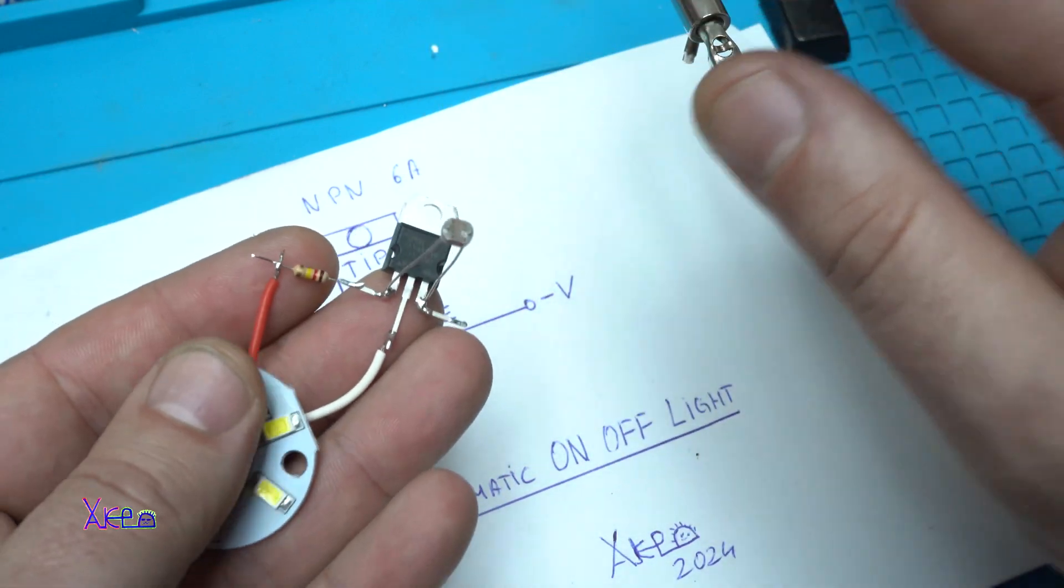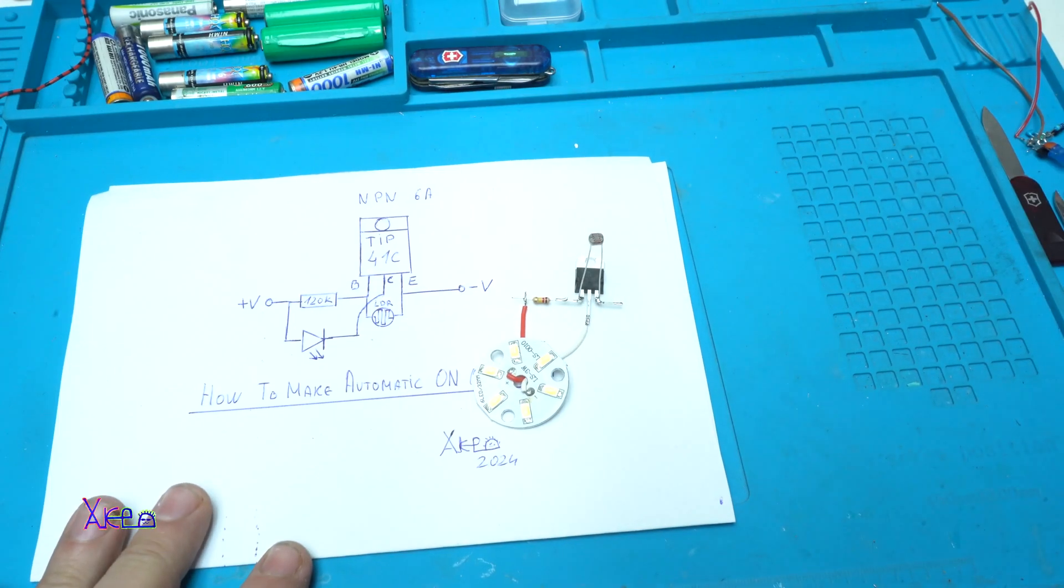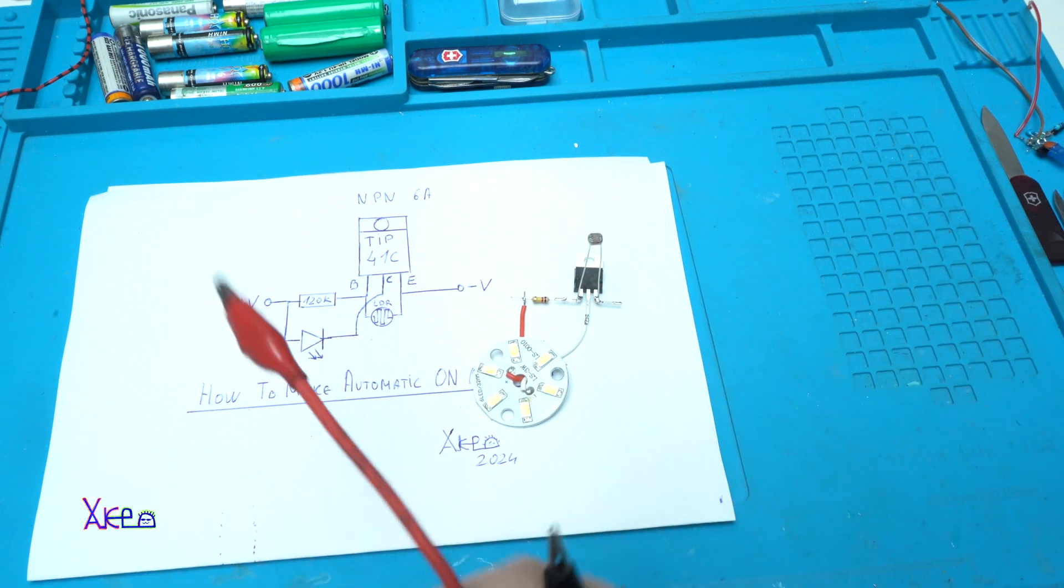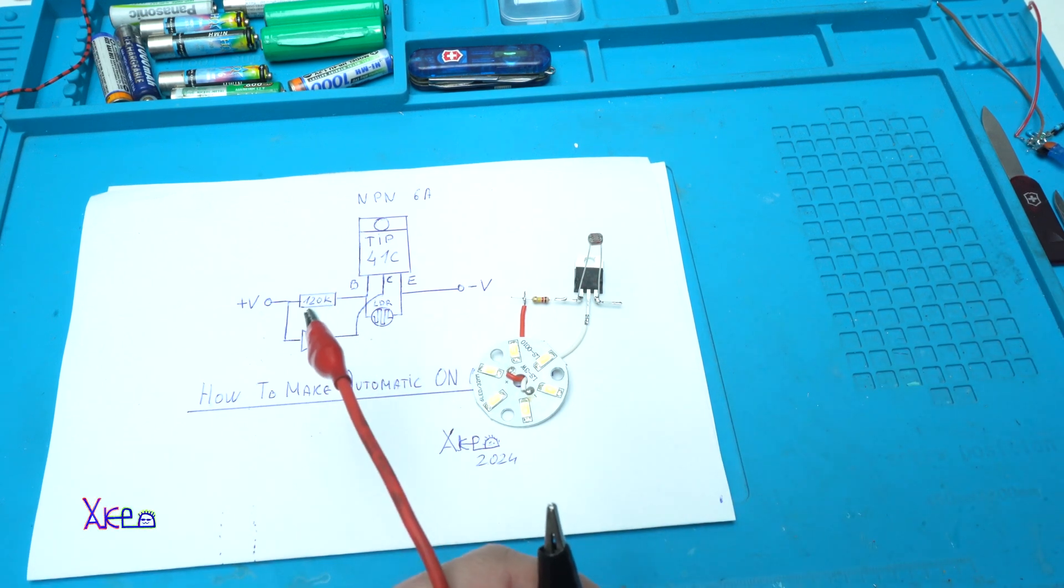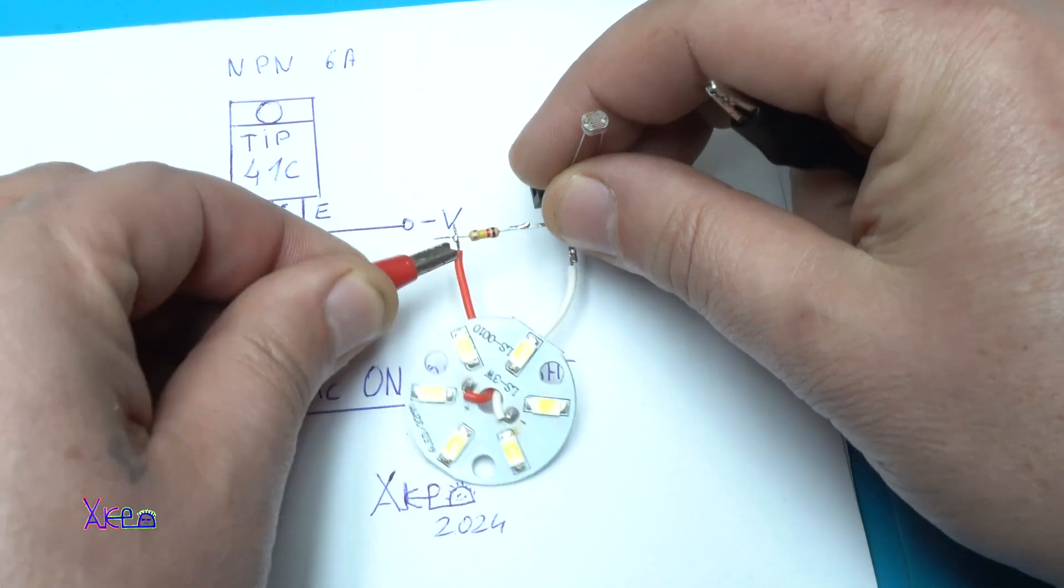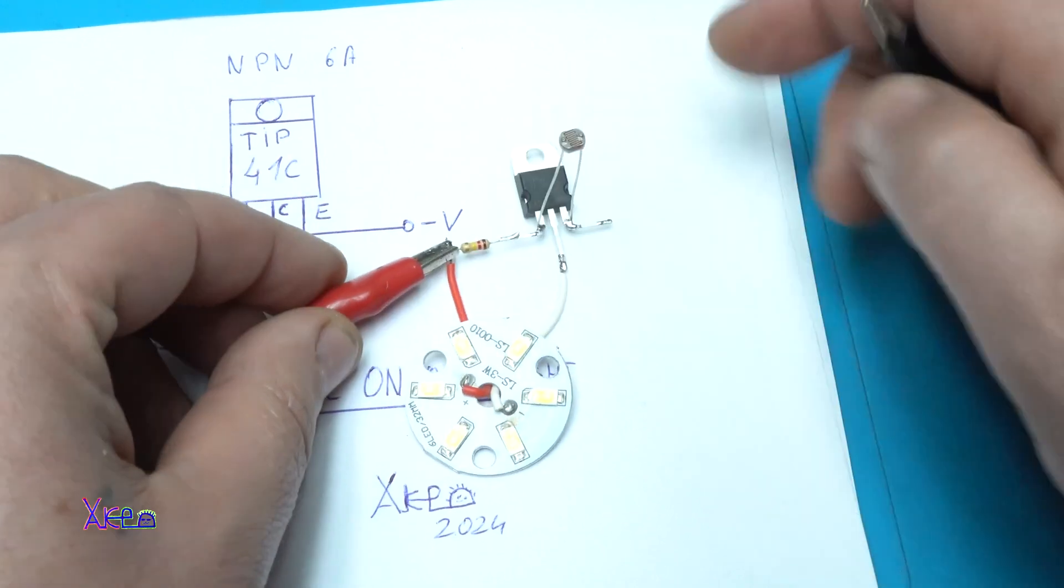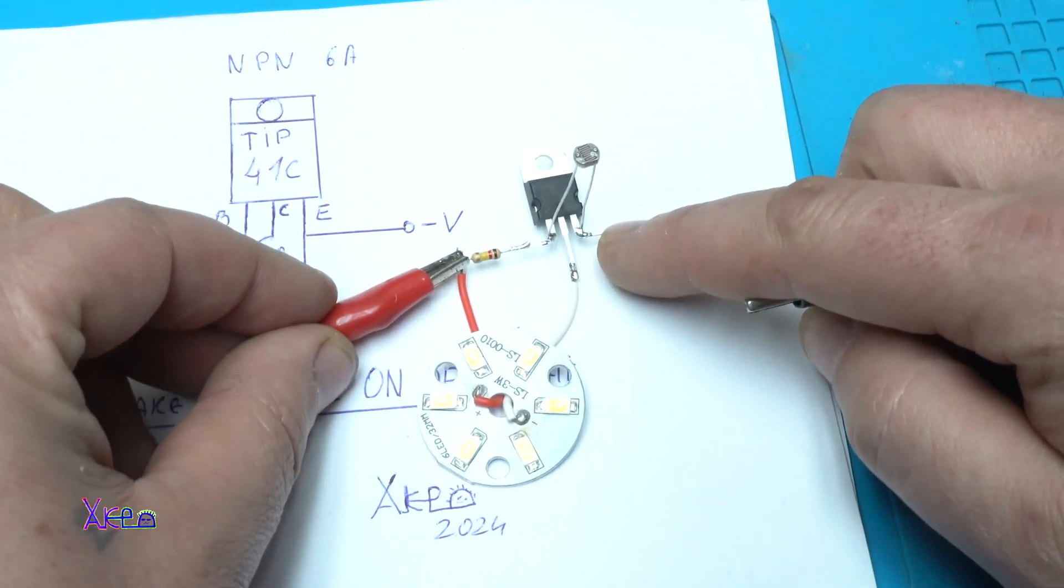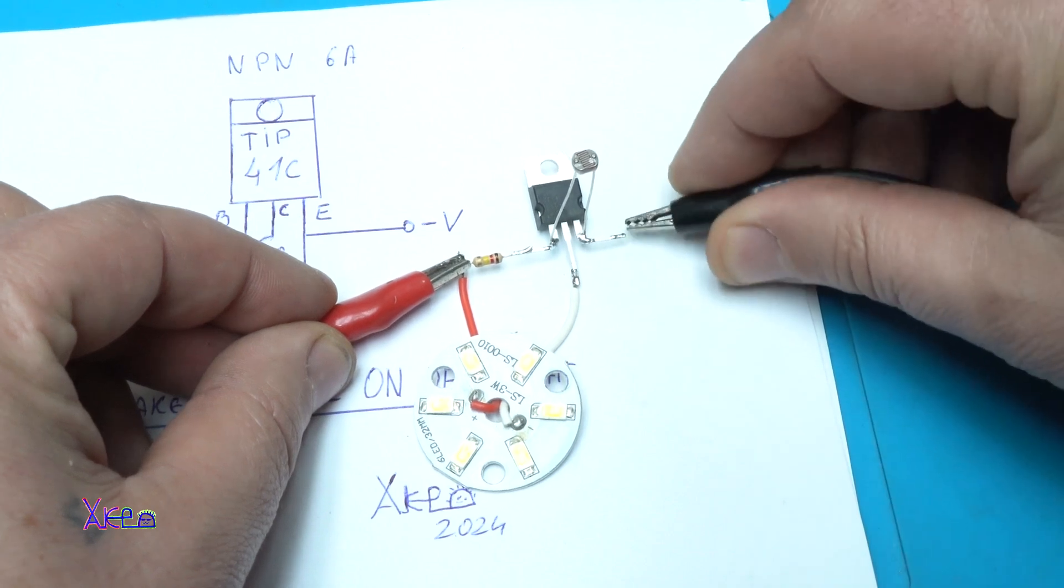Now I'm going to try it. As I said, I'm using 12 volts. Set my power supply to 12 volts. On this point go 12 volts, and on the emitter of the transistor go negative.